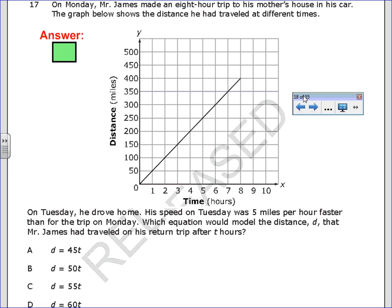For question 17, it says, on Monday, Mr. Daines made an 8-hour trip to his mother's house in his car. The graph below shows the distance he traveled at different times. On Tuesday, he drove home. His speed on Tuesday was 5 miles per hour faster than the trip on Monday. Which equation would model the distance that Mr. Daines has traveled in his return trip after 2 hours?